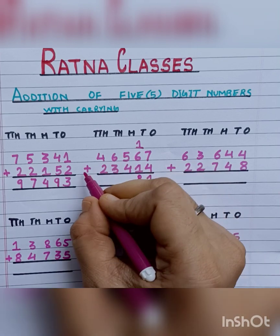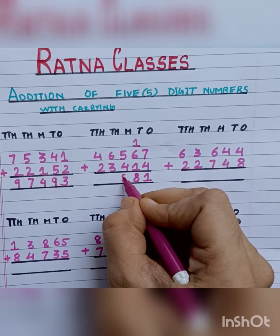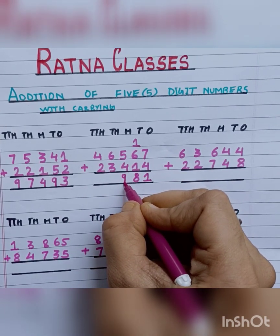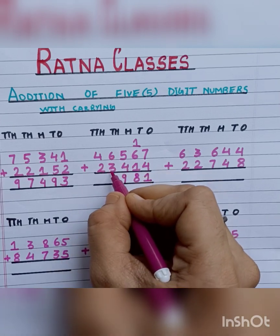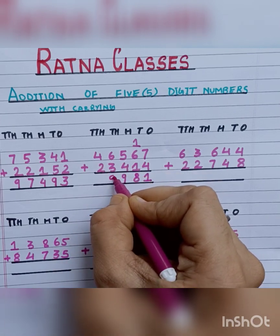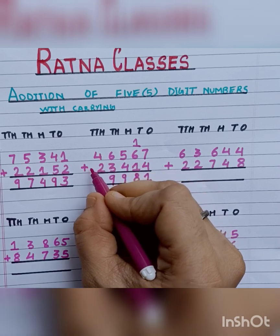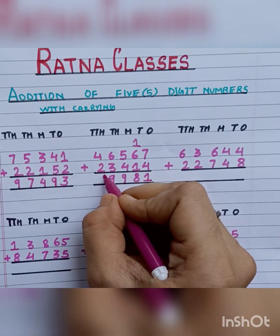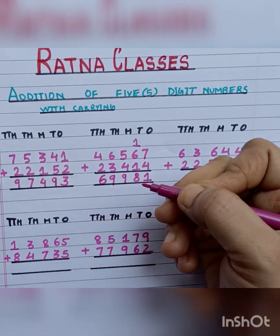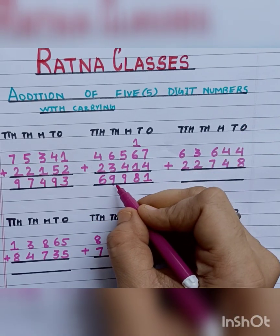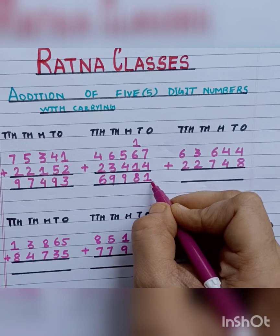5 plus 4 is 9. Then 6 plus 3 is 9. And last, 4 plus 2 is 6. We got our answer: 69,981.